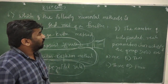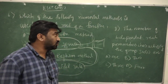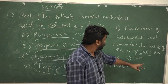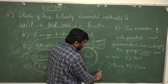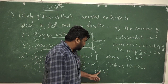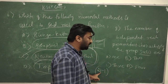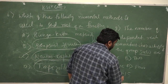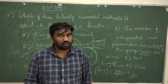Question number 8: the number of independent real parameters characterizing the group SU(2) — a special unitary matrix of order 2. Using the formula 2s² - 1, where s is the order: 2×(2²) - 1 = 4 - 1 = 3. So there are 3 independent real parameters for a special unitary matrix of order 2.